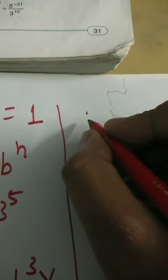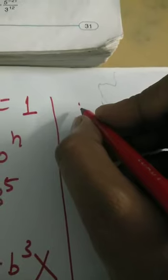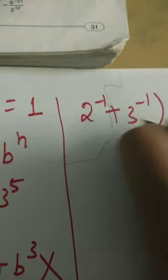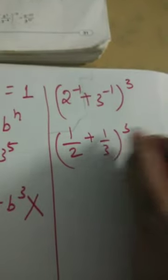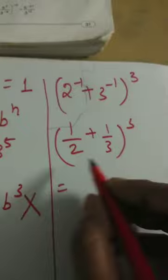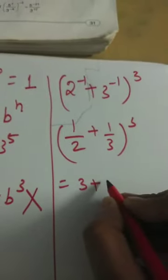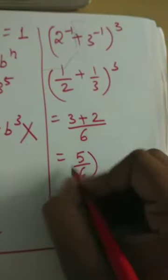There is a question: (2⁻¹ + 3⁻¹) power 3. First, 2⁻¹ = 1/2 and 3⁻¹ = 1/3. Taking the LCM, this becomes (3 + 2)/6, which is 5/6. So the expression becomes (5/6) power 3.